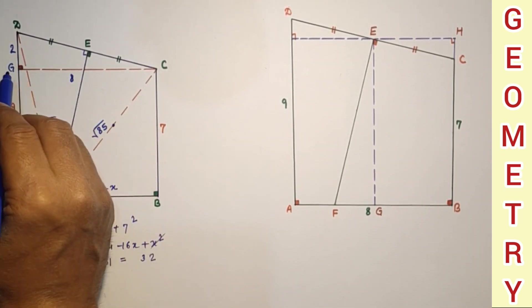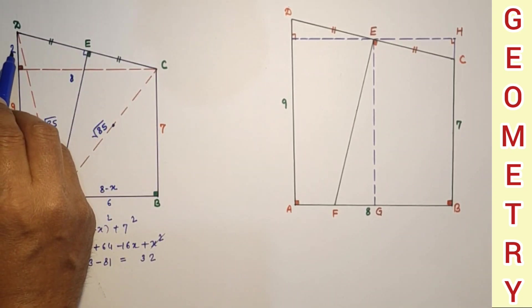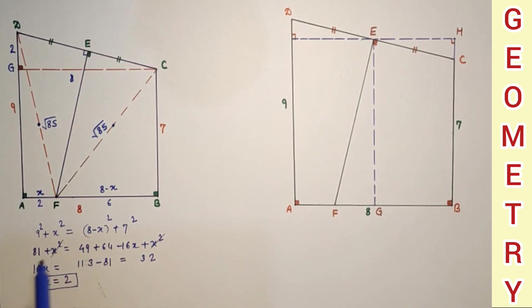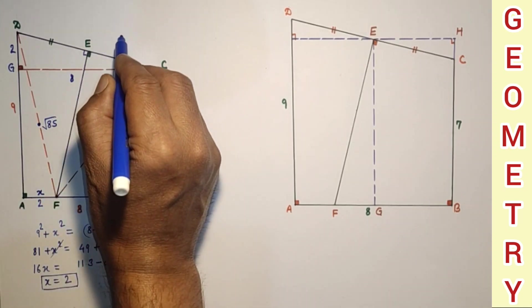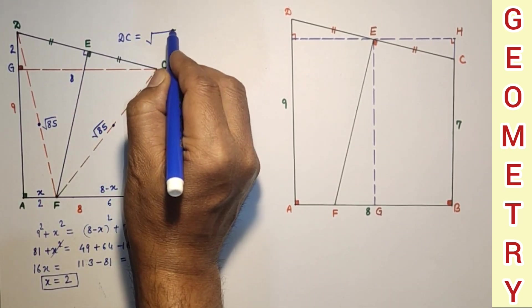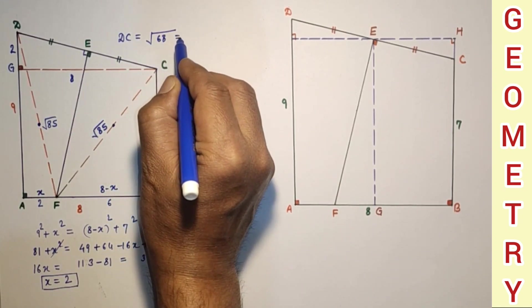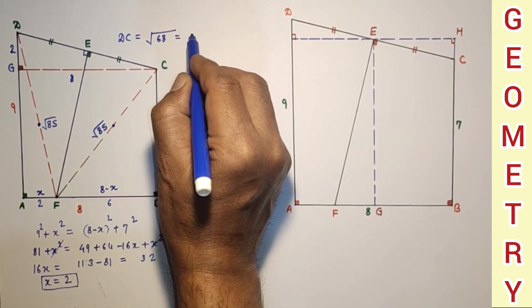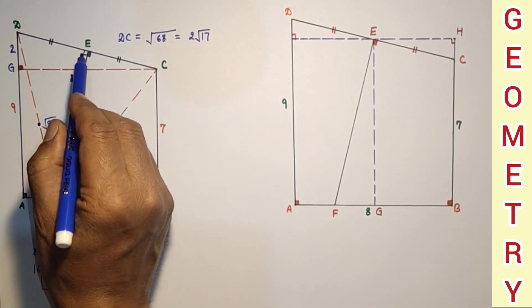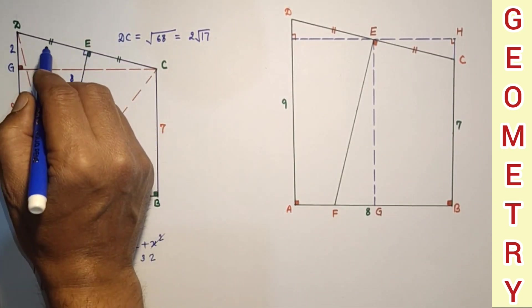Using the Pythagorean theorem: DC² = GD² + GC² = 2² + 8² = 4 + 64 = 68, so DC = √68 = 2√17. Since E is the midpoint of DC, DE = EC = √17.